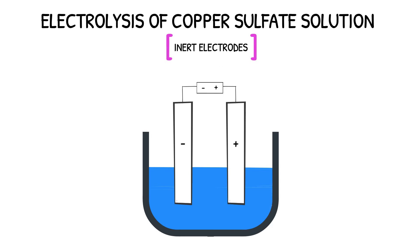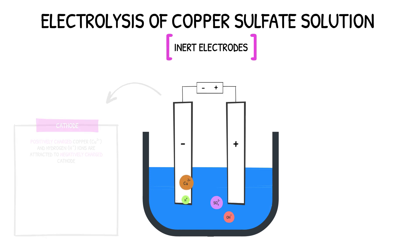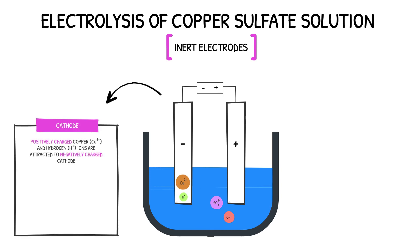The electrical current is passed through the electrolyte and the solution splits into copper ions, sulphate ions, hydroxide ions, and hydrogen ions. The copper and hydrogen ions are both attracted to the cathode. However, only the copper will be discharged as it is less reactive than hydrogen. At the cathode, the copper ions are reduced, gaining two electrons to form copper atoms.